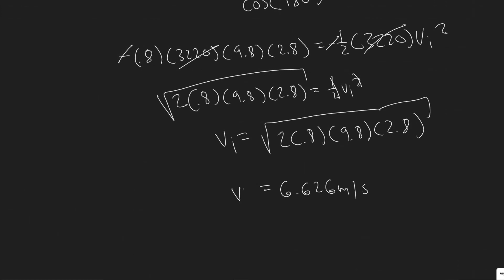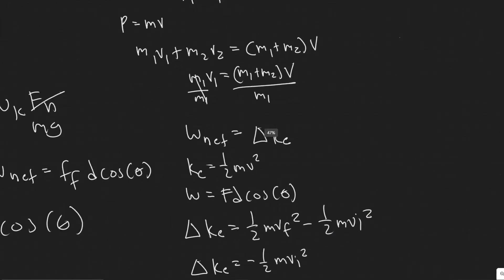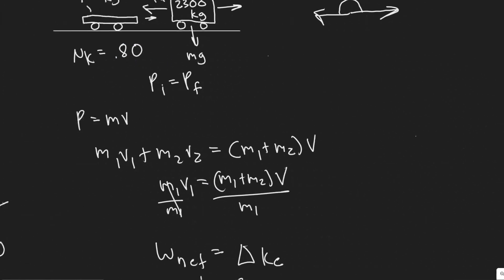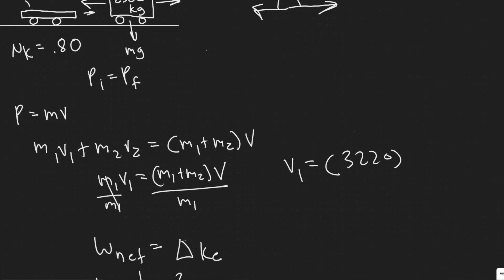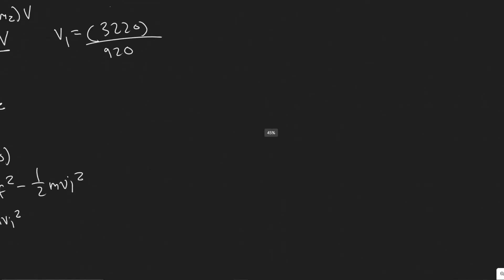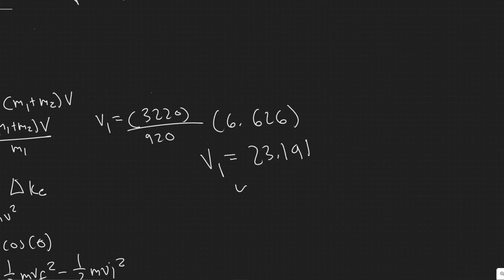Keep in mind, this is not the final answer — this is the velocity right when they combine. We have to plug it back into the momentum formula. V1 equals (M1 plus M2) divided by M1 times V, which is 3220 divided by 920 times 6.626. Plugging this in gives V1 equals approximately 23.191, so about 23 meters per second.